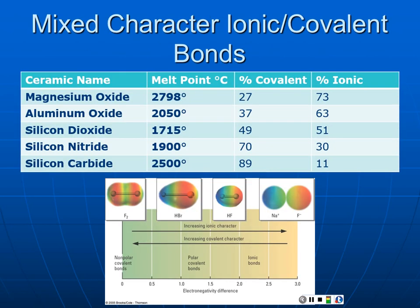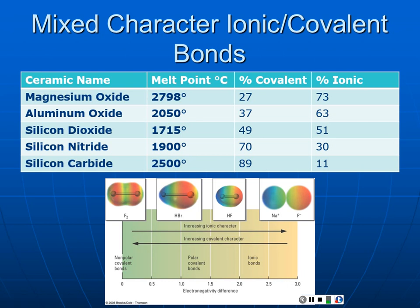We'll calculate percent ionic character in class. Magnesium oxide is primarily ionic with a melting temperature of 2,798°C. Moving to 50-50 mixed covalent-ionic character like silicon dioxide, the melting temperature drops. Moving to more purely covalent bonding, the melting temperature rises again. Highly covalent or highly ionic bonds are quite strong; the mixture shows some suppression of melting temperature. Melting point is a good proxy for bond strength — temperature measures kinetic energy of atoms, and at the melting point, atoms have kinetic energy sufficient to break the bonds.